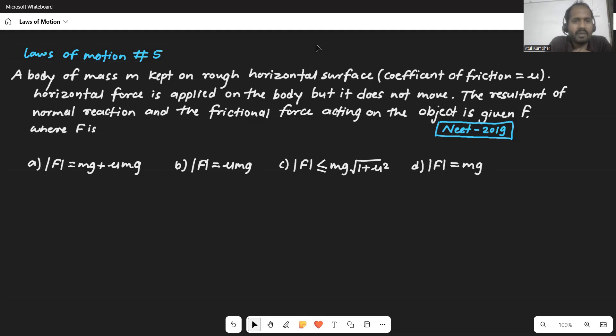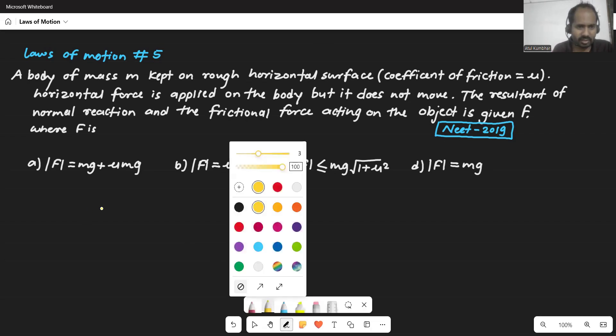A body of mass M kept on a rough horizontal surface, having coefficient of friction mu. Horizontal force is applied on the body, but it does not move. The resultant of normal reaction and the frictional force acting on the object is given as F. And we need to find out that F here. So the question is simple. Let's see. Let's do understand it.